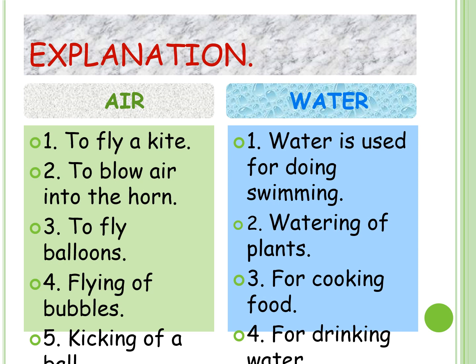Now we will start with the explanation part. Again, you can see there are two columns — on the left hand side it is air and on the right hand side it is water. For air: air is used to fly a kite, air is used to blow air into the horn, air is used to fly balloons, air is used in flying of bubbles, and air is used in the kicking of a ball. With the help of air we can do these activities.